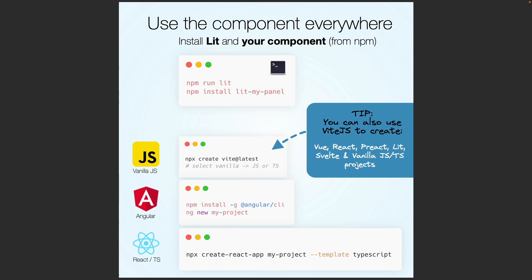After publishing the component on NPM, we can use it in any project — React, Angular, Vue, and so on — by installing Lit and our new component from NPM.